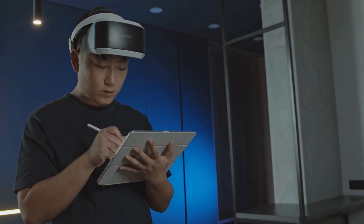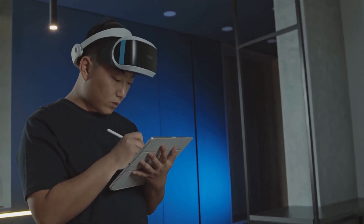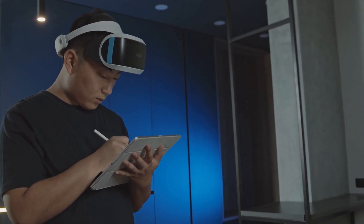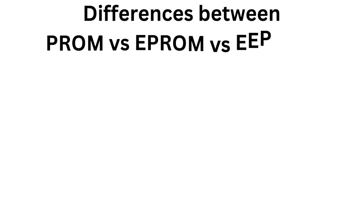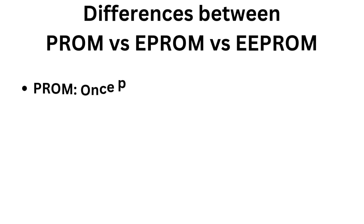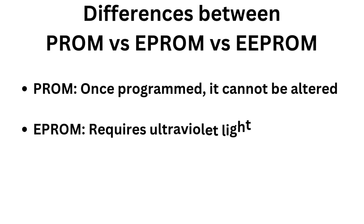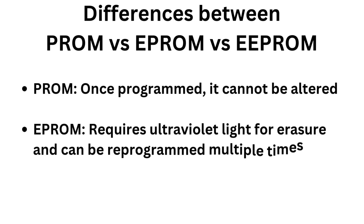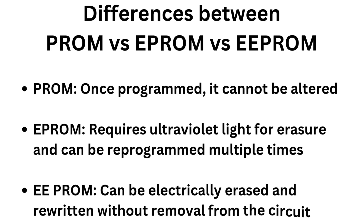PROM, EPROM, and EEPROM are all non-volatile — all three types retain data even when power is turned off. Key differences: PROM, once programmed, cannot be altered. EPROM requires ultraviolet light for erasure and can be reprogrammed multiple times. EEPROM can be electrically erased and rewritten without removal from the circuit.